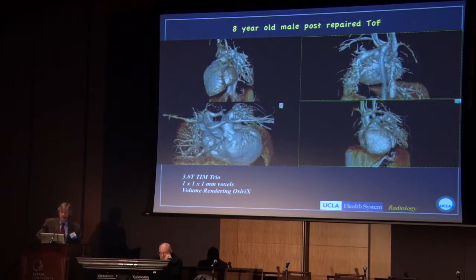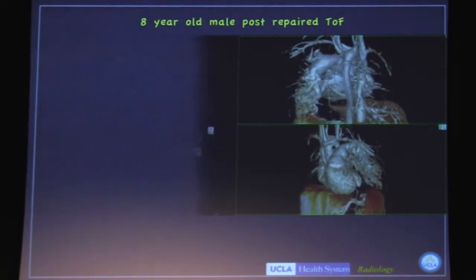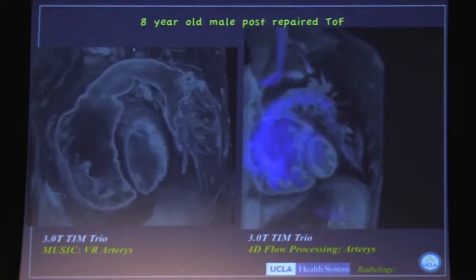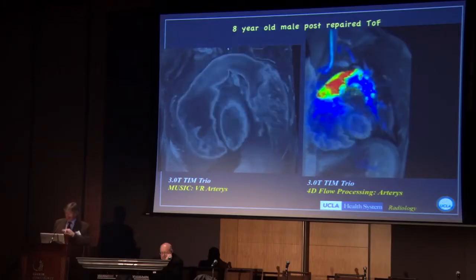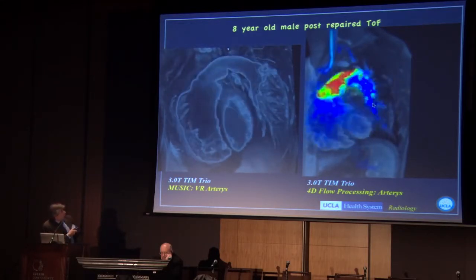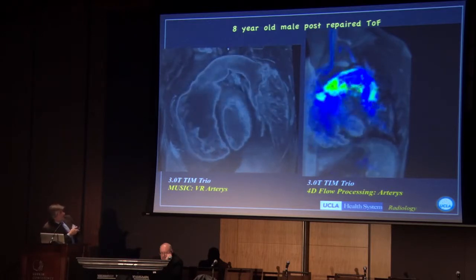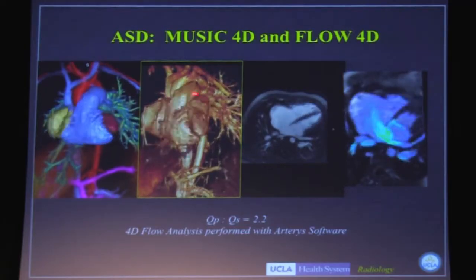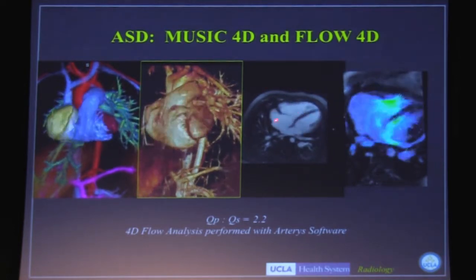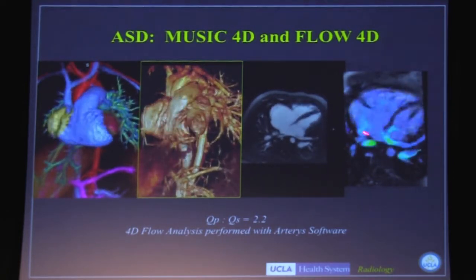Here's an eight-year-old, also post-tet repair. Notice how pulsatile the pulmonary arteries are here. Another very powerful feature we can add is the measurement of four-dimensional flow. Pierangelo mentioned measuring flow in two dimensions earlier. With the same approach, we can do high-resolution MUSIC imaging and then lower-resolution but still very helpful flow imaging. Here we can see free regurgitation across the pulmonary valve. Here's a patient with an ASD — the images on the left are MUSIC with color rendering and without, and here we have the 4D flow measurement showing free flow across this ASD.